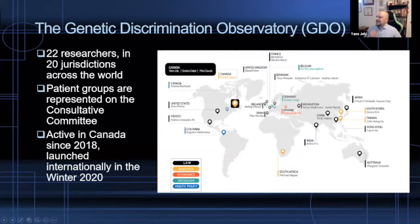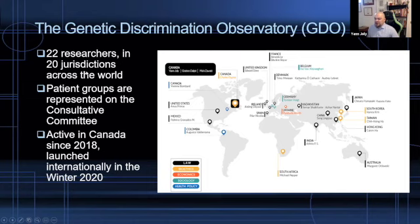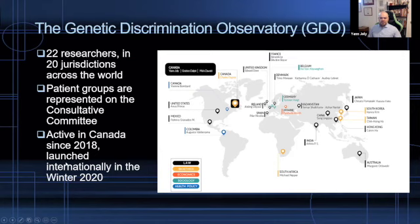The greatest strength of the observatory is that it has taken years to create — it's really a collaborative relationship built between researchers on genetic discrimination across the world. Members of the Genetic Discrimination Observatory now represent 20 jurisdictions, with 22 experts from 20 jurisdictions across the world. The northern hemisphere is overrepresented compared to the southern one, though we do have important countries from the southern hemisphere represented, and we're always interested in adding more experts. Patient groups are also represented on our consultative committee.